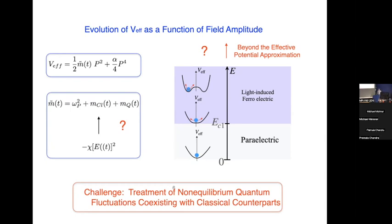What we expect is that going from the paraelectric phase, we go into the light-induced ferroelectric phase. But this quantum correction term will play a role in what the critical fluence is. The challenge of determining this mass is that we have to treat non-equilibrium quantum fluctuations at the same time as classical counterparts, because experimentalists in Hamburg tell us they can't do these experiments below 2 Kelvin.